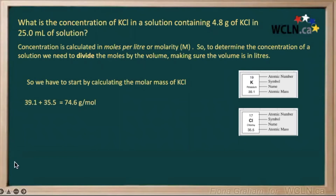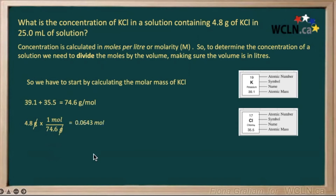We have 4.8 grams, so we multiply using our conversion factor: 1 mole = 74.6 grams. The units cancel top and bottom, leaving us with moles. So 4.8 divided by 74.6 gives us 0.0643 moles.